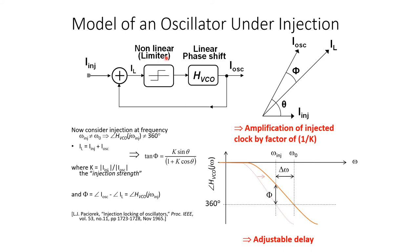As a result, the phasor here is not aligned with the phasor at the output of the ILO. You've got I_AUS with a phase shift that differs from that of I_L, and the difference between those phasors is determined by the amount by which the phase deviates from 360 degrees, which in turn depends on the frequency offset delta_omega. If we inject further away from the resonant frequency, we get more phase shift arising between these two phasors.